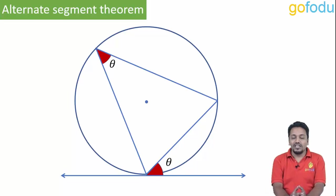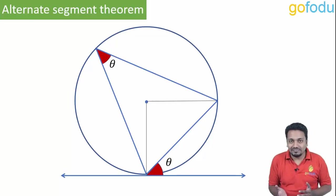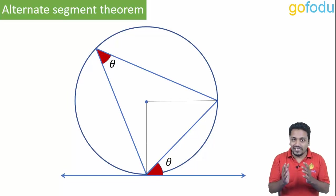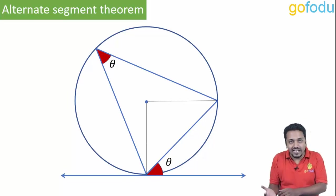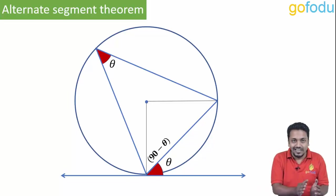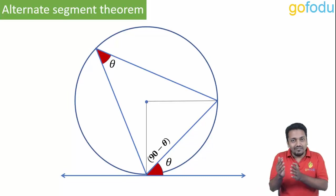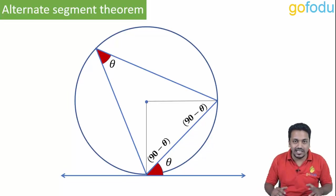The proof is quite easy. Construct two radii. Now we know that the radius is perpendicular to the tangent. So if the chord makes a theta angle with the tangent, then its complementary angle will be 90 minus theta. Its opposite angle will also be 90 minus theta, as angles opposite to equal sides are equal.